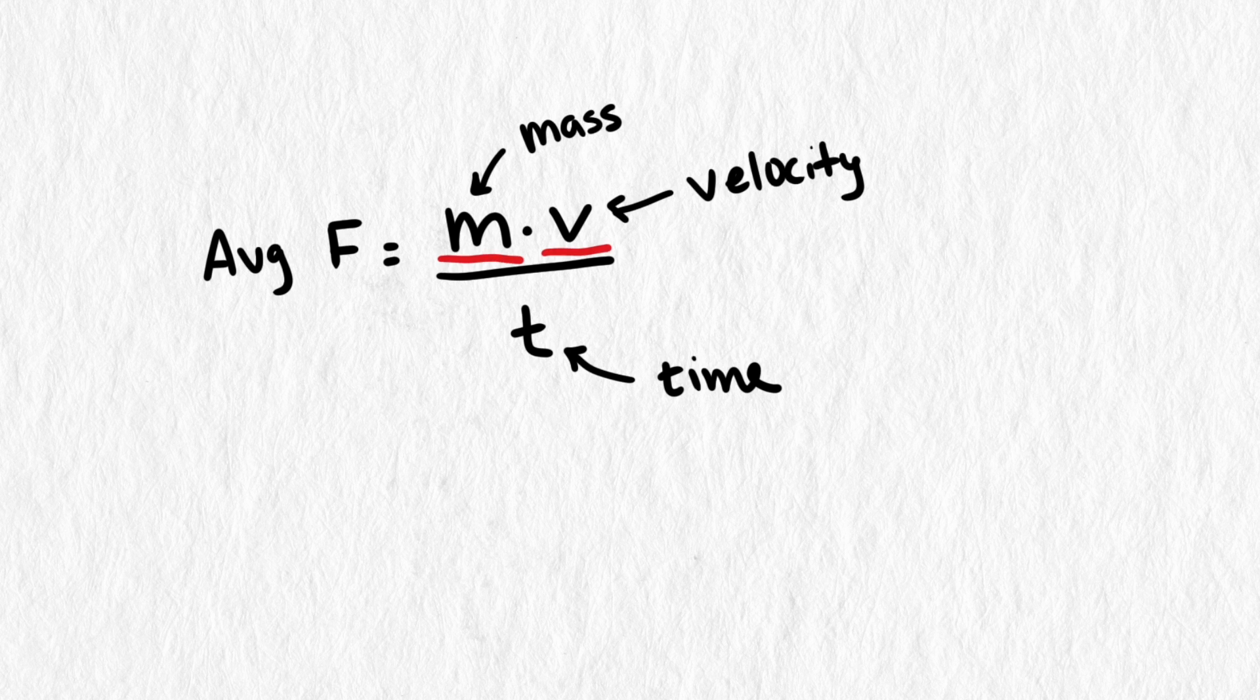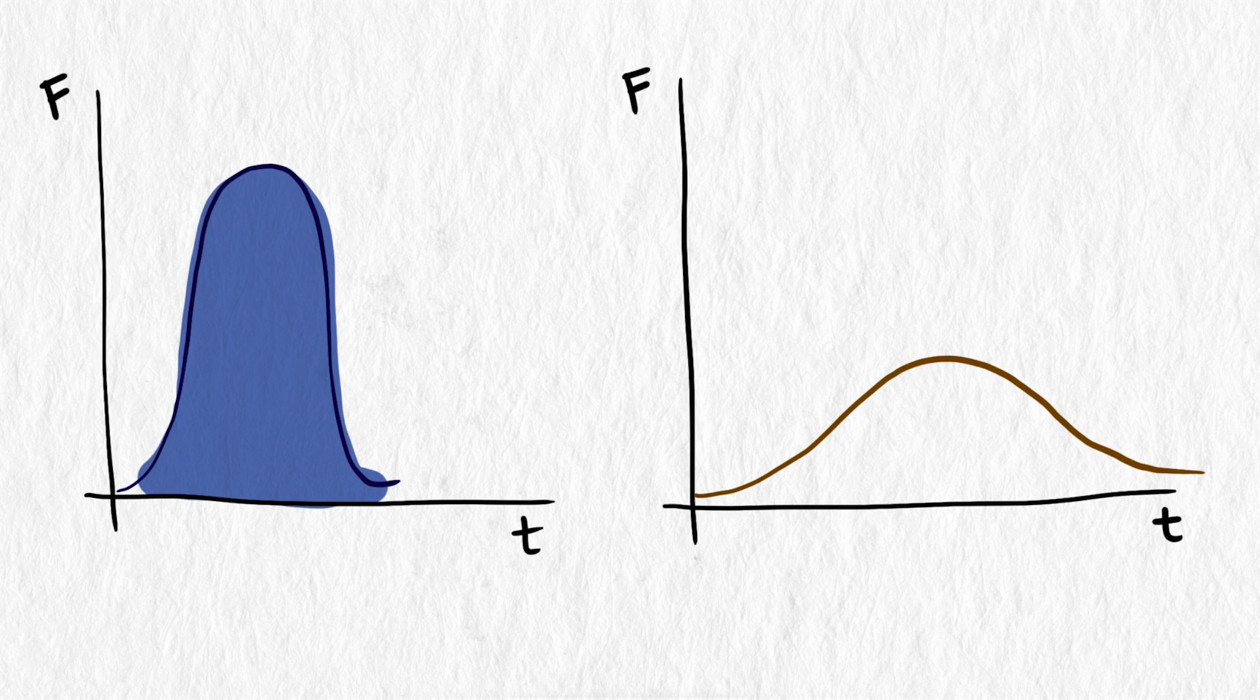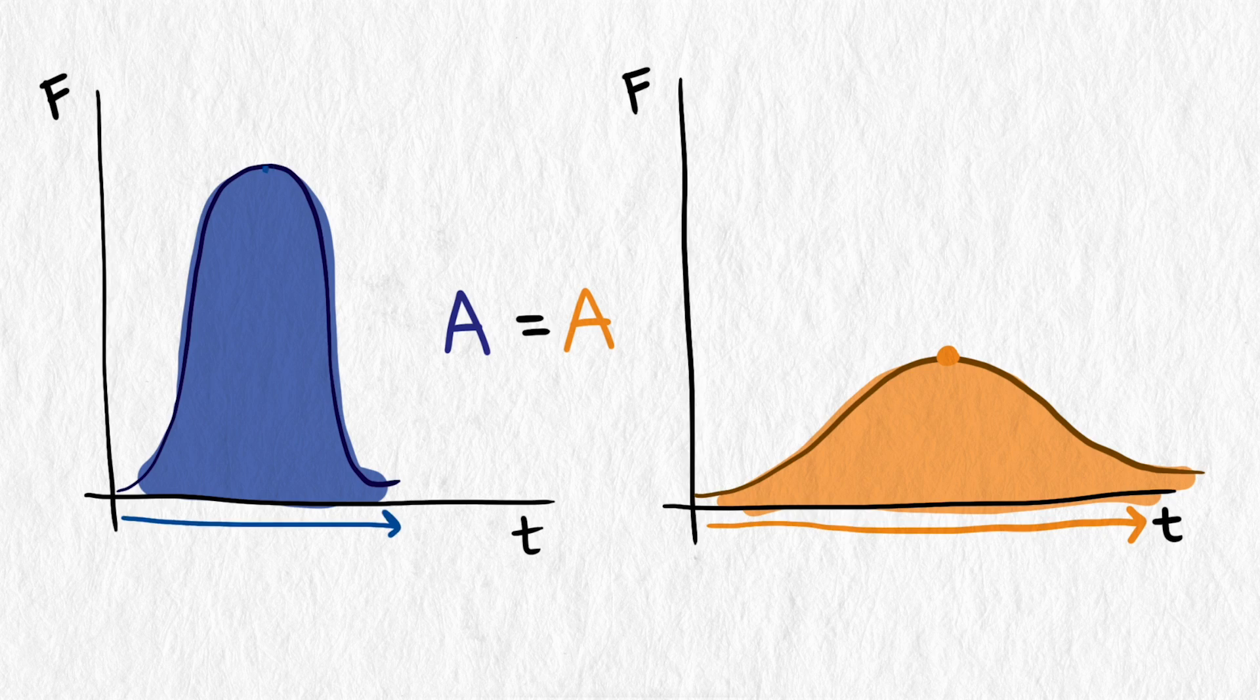Mass and velocity make sense when determining force, but you might be wondering why time is a factor in this equation. These graphs represent how force changes over time when mass and velocity are held constant. The total amount of force is actually the same, but the longer two objects stay in contact during a collision, the less severe the peak impact force is.